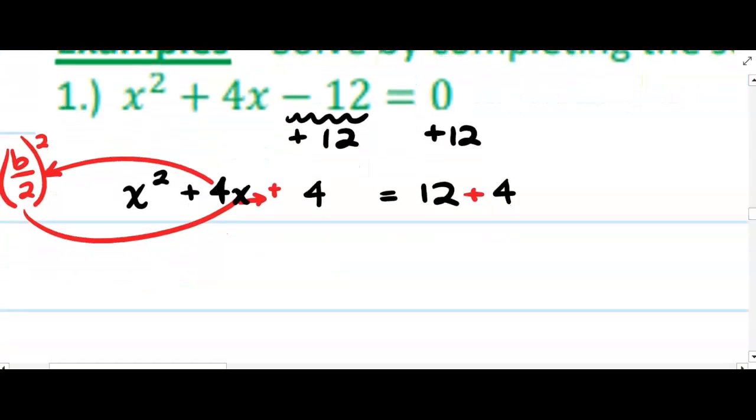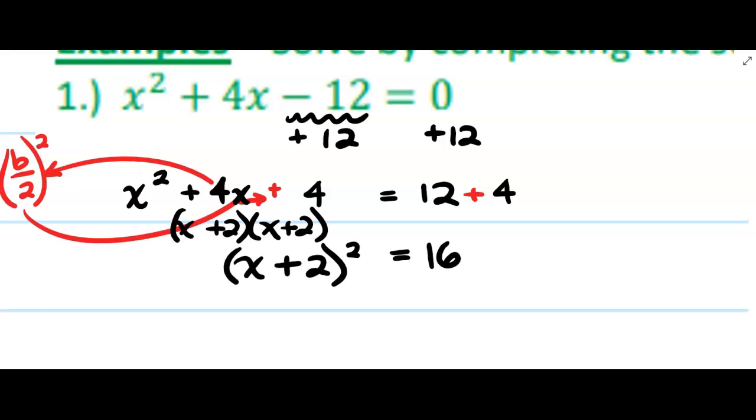So I'll add it to both sides. Now the right side simply becomes 16. The left side becomes x + 2 times x + 2, which I'm just going to write as (x + 2) the quantity squared.